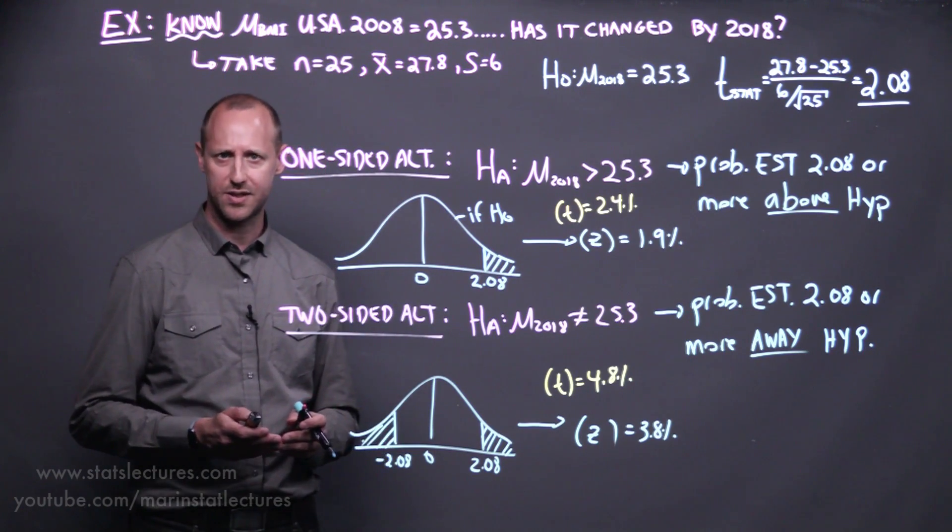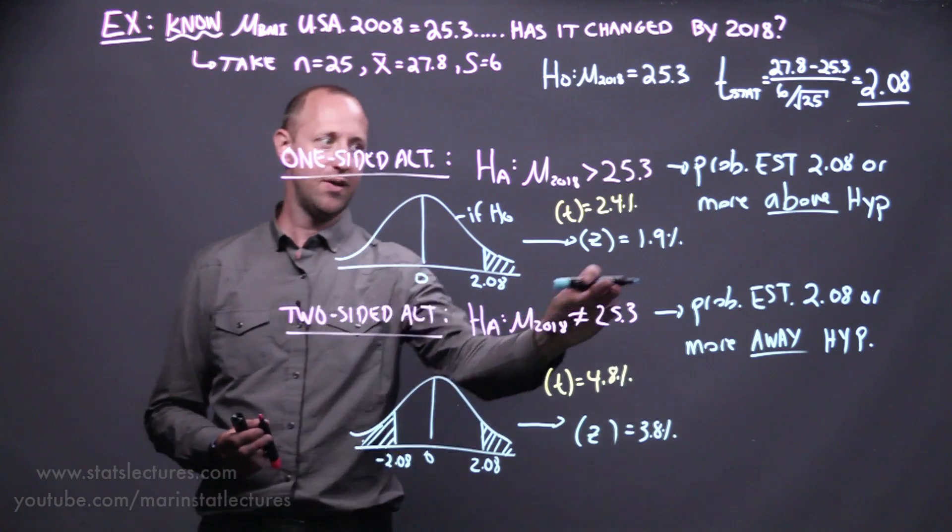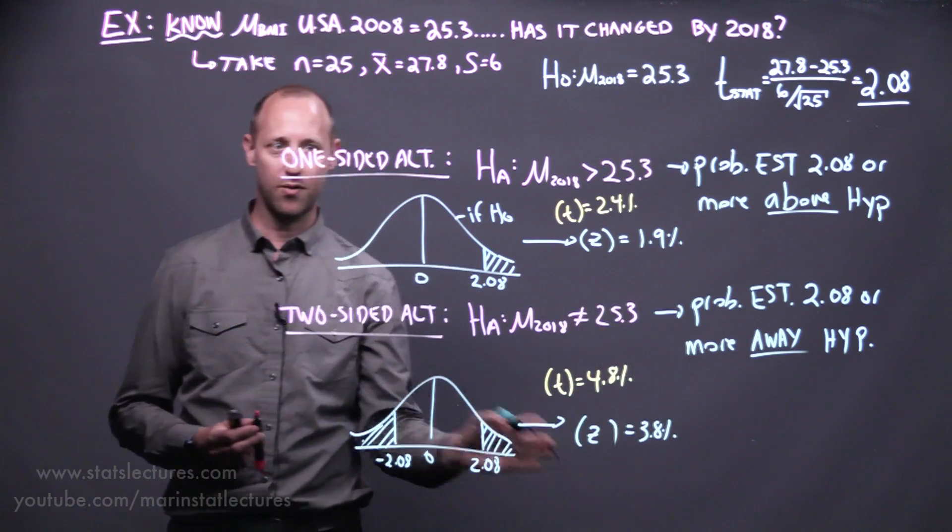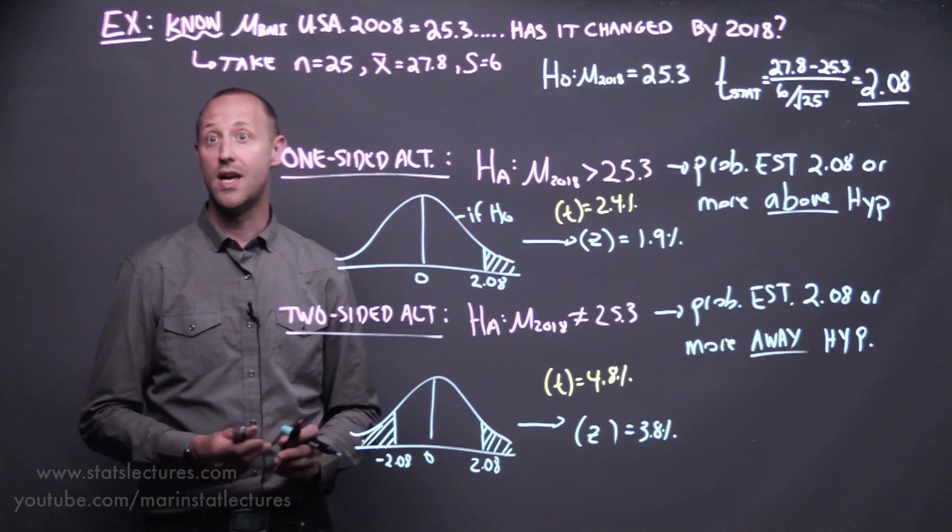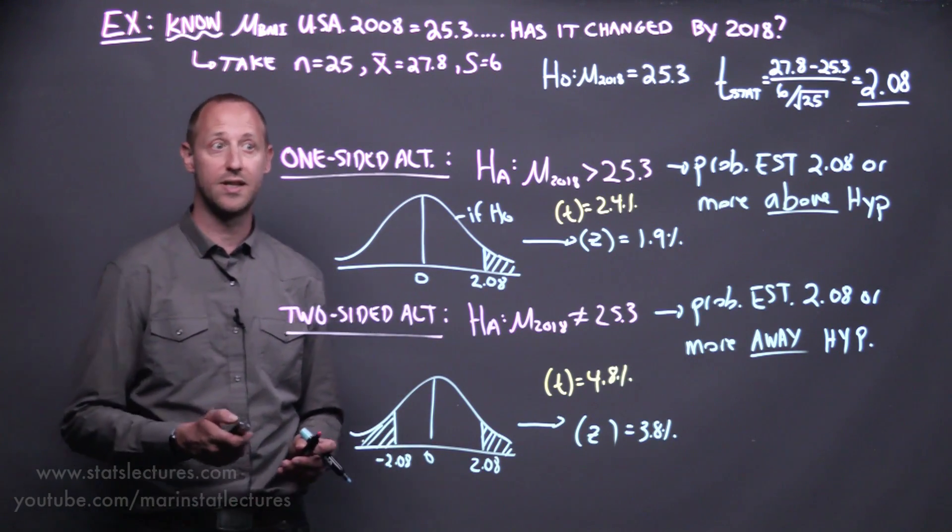You can notice that, in a practical sense, it's not a big difference. If the p-value is small, it's going to be small regardless of a one or two-sided test. If it's large, it's going to be large regardless of a one or two-sided test.